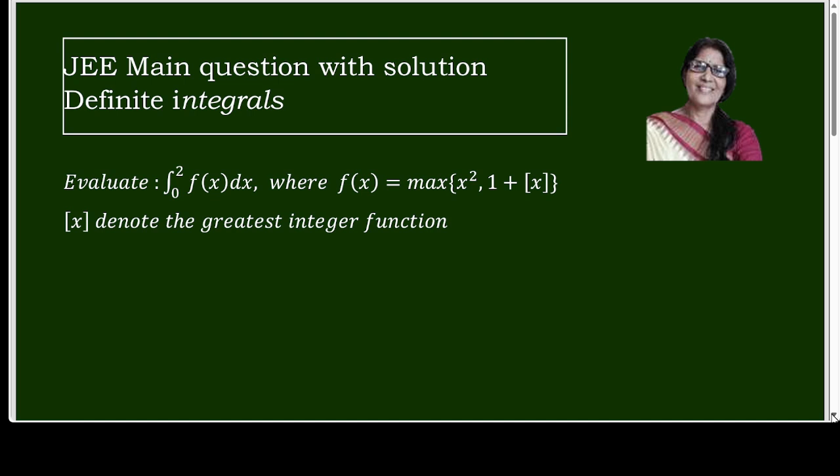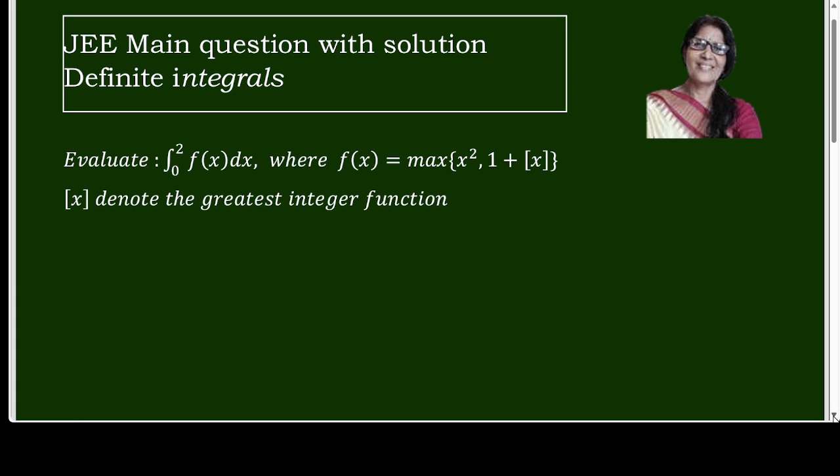The question is: evaluate the integral of f(x) dx. The lower limit is 0 and upper limit is 2. f(x) equals the maximum of x squared and 1 plus the greatest integer function of x, where this box notation denotes the greatest integer function.